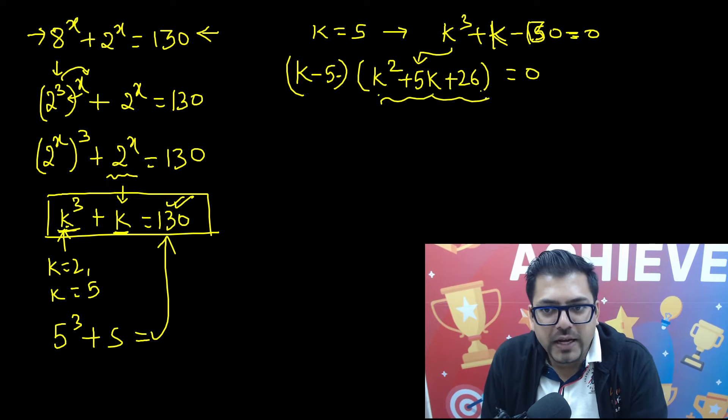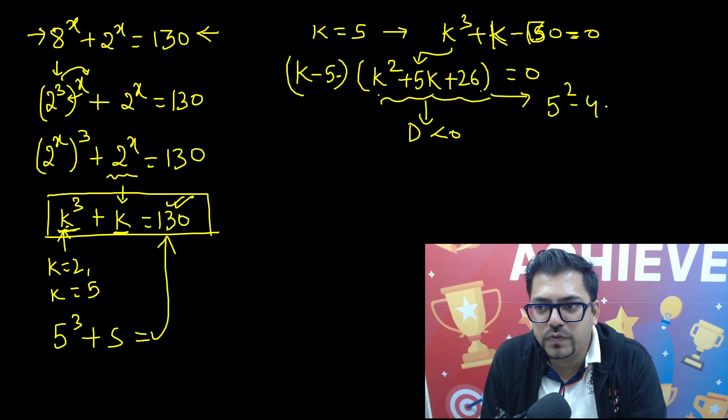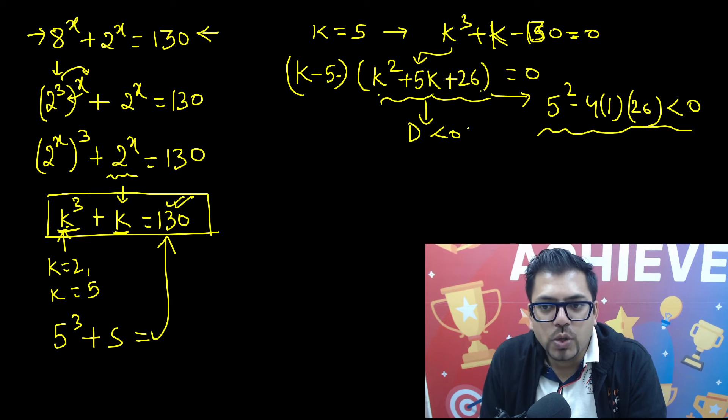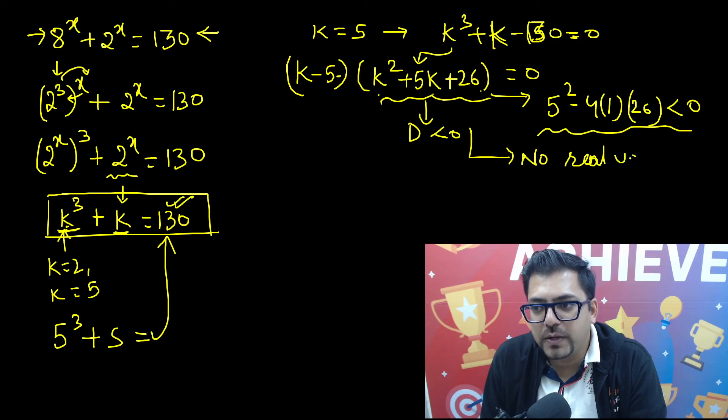Here we are able to find that the discriminant for this quadratic equation is less than 0. If you want, you can find it out: discriminant is b square minus 4ac. A is 1, c is 26. If you solve this, you will get a negative value. Since discriminant is less than 0, there will be no real values of k. So if no real values of k satisfy the equation, we are left with only one value: k equals 5.